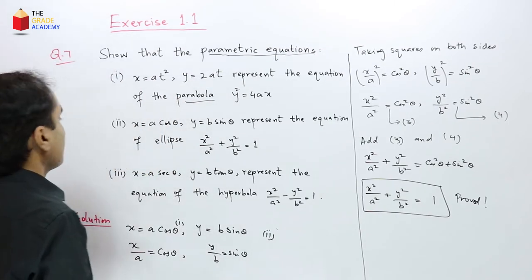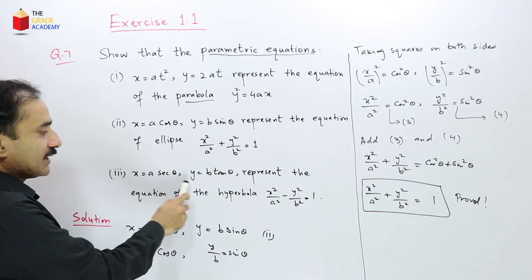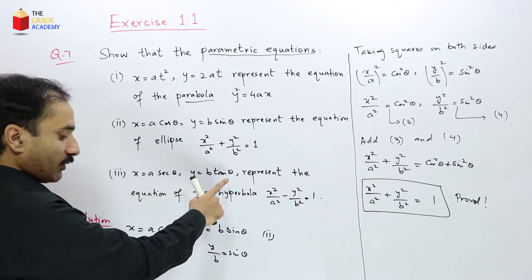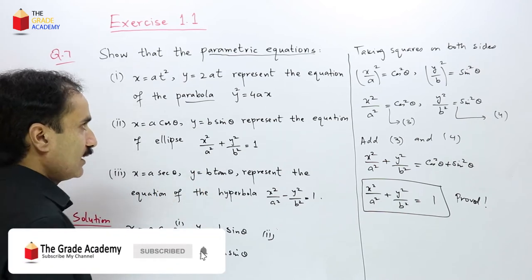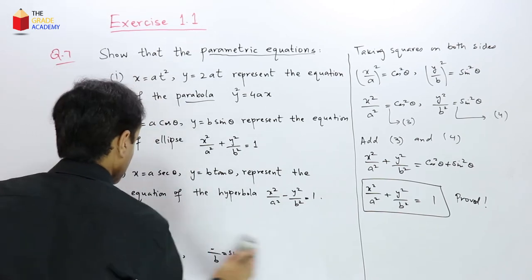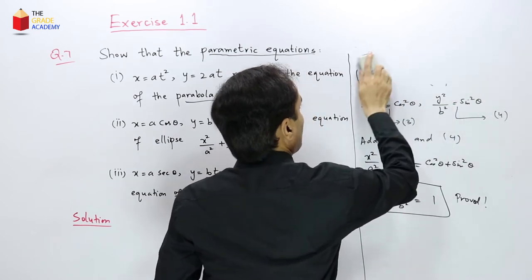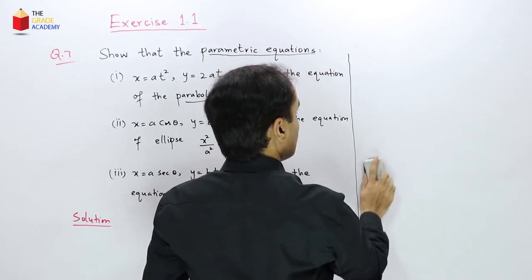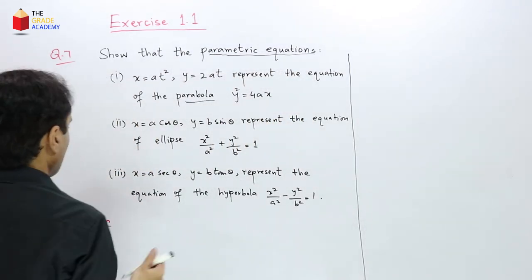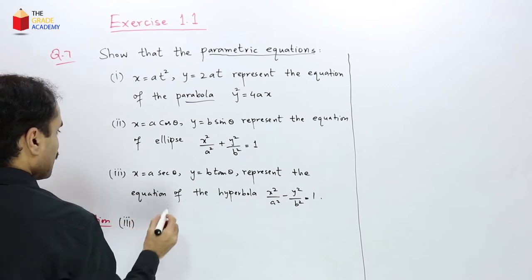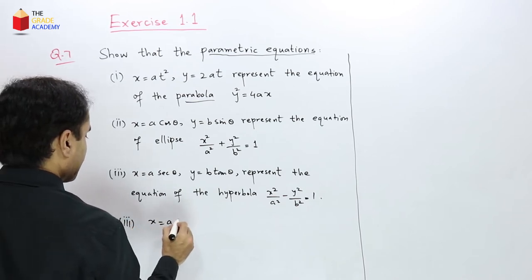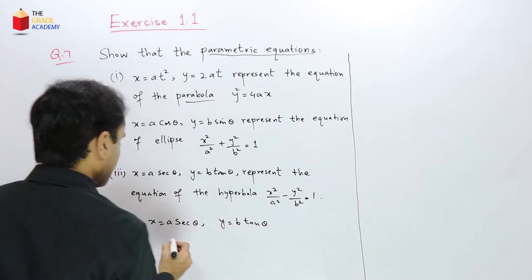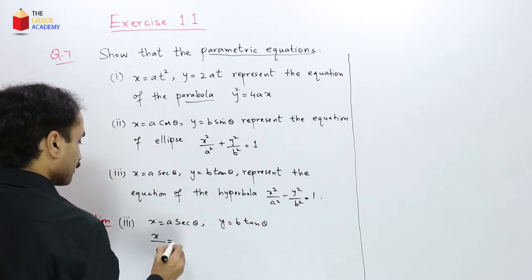For the third part, the parametric equations are x = a·secθ and y = b·tanθ. Here θ is the parameter and we need to eliminate it. We'll use a similar approach to prove the equation of a hyperbola.